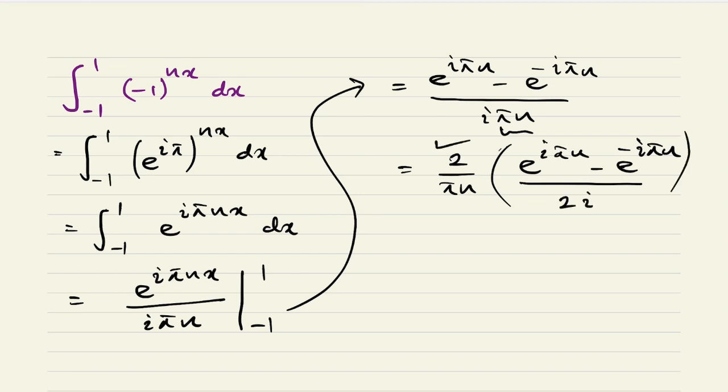Now we know this is the complex definition of sine of πn, so we have 2 times sin(πn) over πn. Okay, this is the answer for this integral. If you like this type of videos, please subscribe to this channel. Thank you for watching.